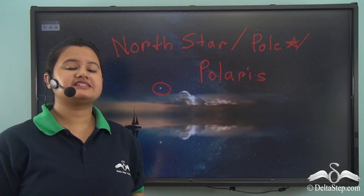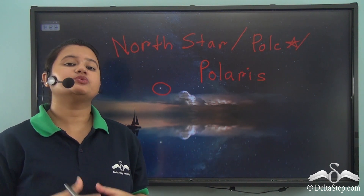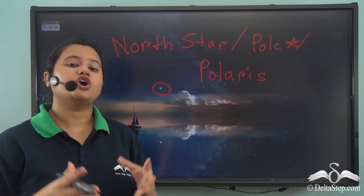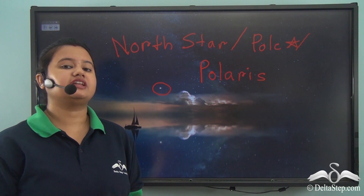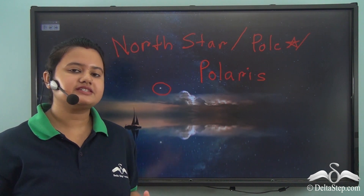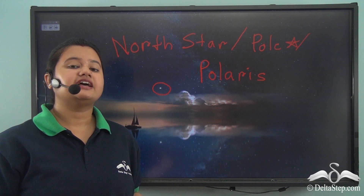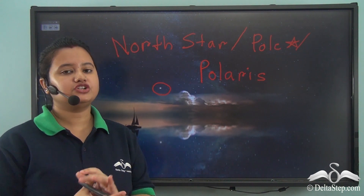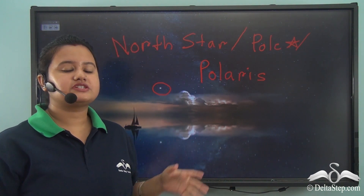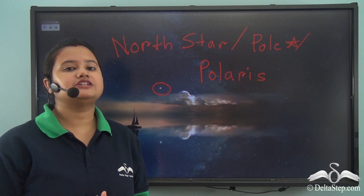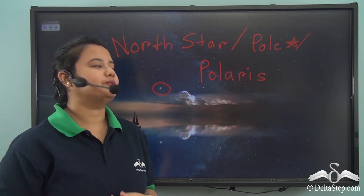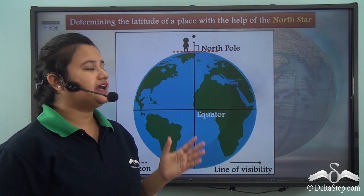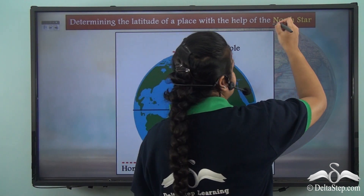Now, this bright star is stationary with respect to its position from the Earth — that is, this star remains at a constant position in the sky. Due to its consistent position in the sky, sailors in ancient times used this North Star as a navigation tool. This North Star also helps us to determine the latitude of a place. We will now see how.